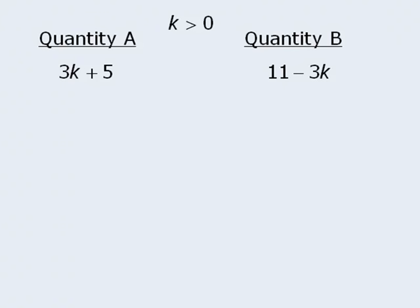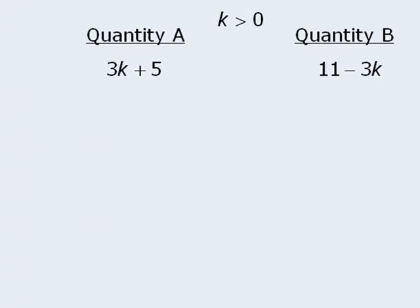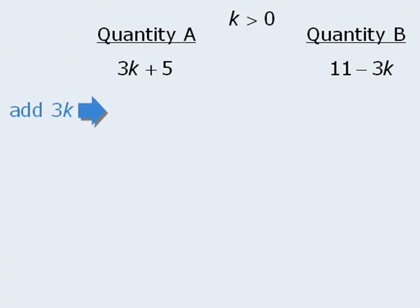To do this, we'll perform the same operation on both quantities. So to begin, we can add 3k to both quantities to get 6k plus 5 for quantity A and 11 for quantity B.